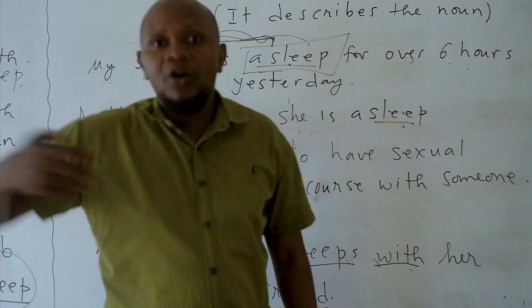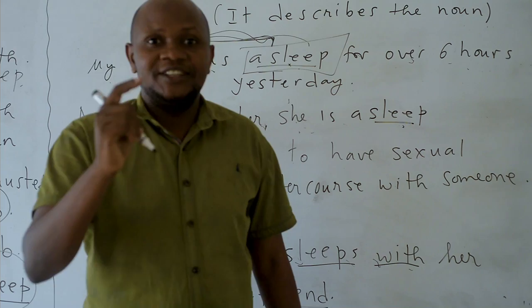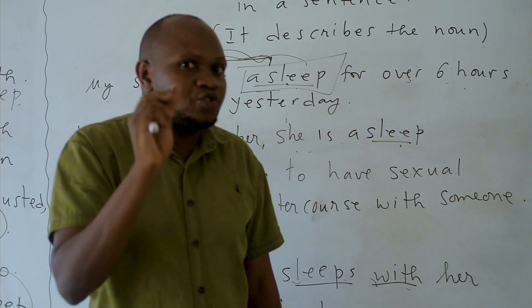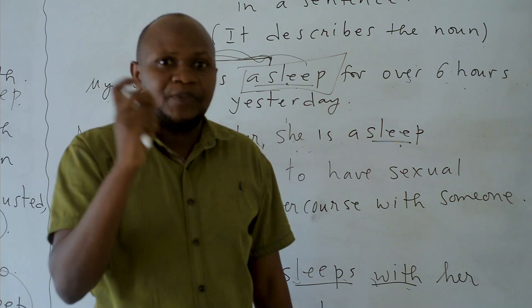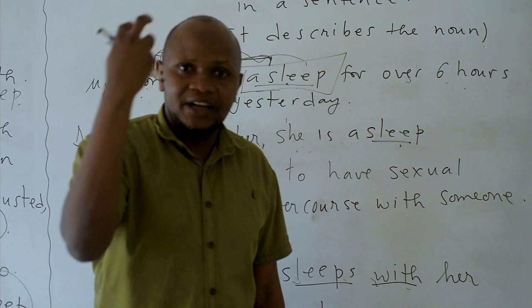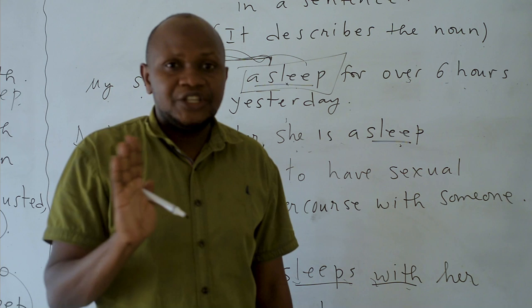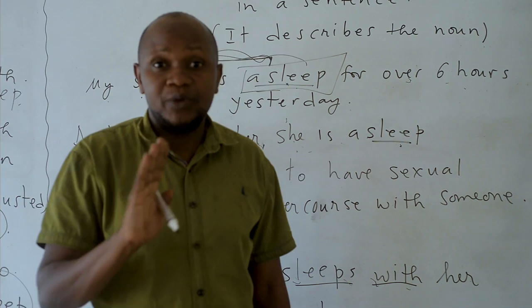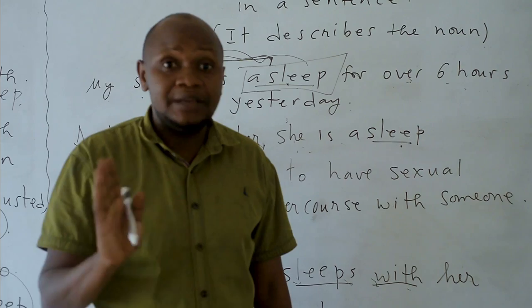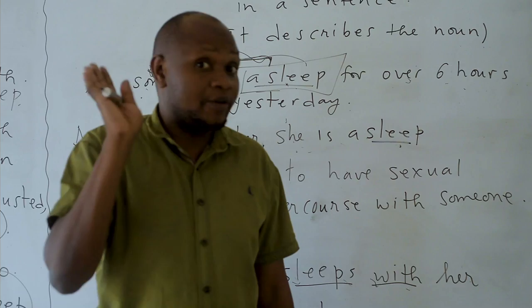To sleep with means to have sexual intercourse with someone. For example: I slept with my wife yesterday. John slept with that girl yesterday. I don't like to sleep with people I don't know. Or: nuns don't sleep with any person — they don't sleep with anyone.